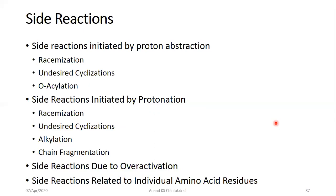The next class of side reactions is side reactions initiated by protonation. Under this there are four different types: racemization, undesired cyclization, alkylation, and chain fragmentation. The third type is side reactions due to over-activation, and the fourth type is side reactions related to individual amino acids. There is one more type called deletion side reactions, which we will see at the end of the topic.